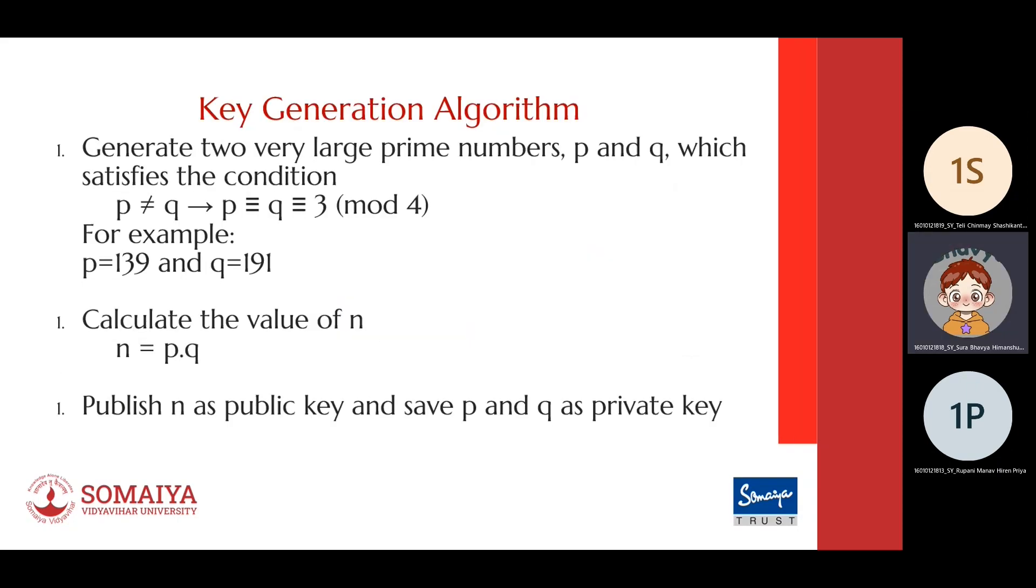This is the key generation algorithm. Rabin cryptosystem basically needs two keys that must satisfy two conditions: they must be very large prime numbers, and they should be a multiple of three mod four, for example 139, 191, etc.